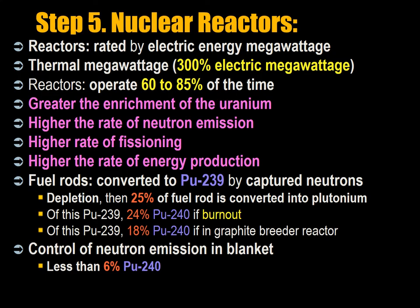Nuclear reactors are rated by their electrical energy megawattage. The thermal megawattage used for nuclear materials production is 3 to 5 times that value, so if we know a reactor's electrical output we can estimate how much plutonium it can generate. Reactors operate between 60 to 85% of the time depending on efficiency in refueling, with the fissile material exchanged typically every 24 months. The greater the enrichment of uranium-235, the higher the rate of neutron emission and energy production. However, very high enrichment levels raise proliferation concerns — if a country is using 60% rods, it raises questions about diversion for weapons.